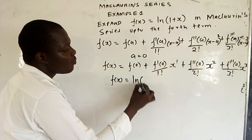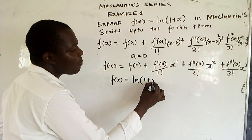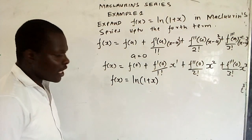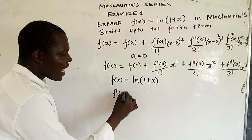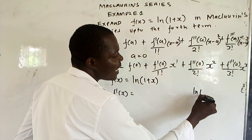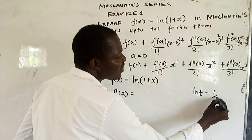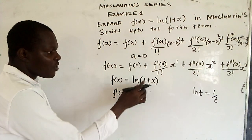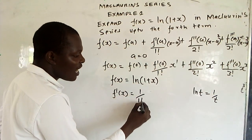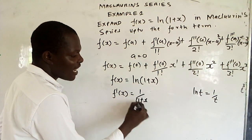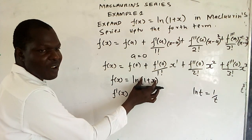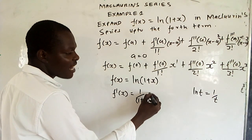You've been given f(x) = ln(1 + x). If you want f'(x): when you differentiate ln(t), you get 1 over t. So if you differentiate ln(1 + x), you get 1 over (1 + x). Then you differentiate the inner function 1 + x, and you just get 1.